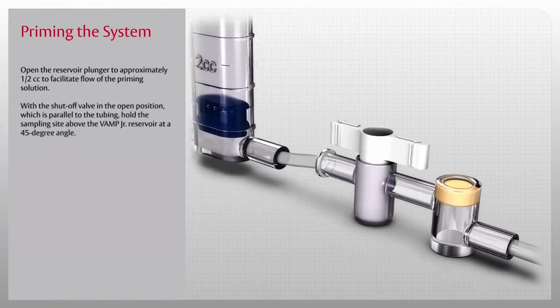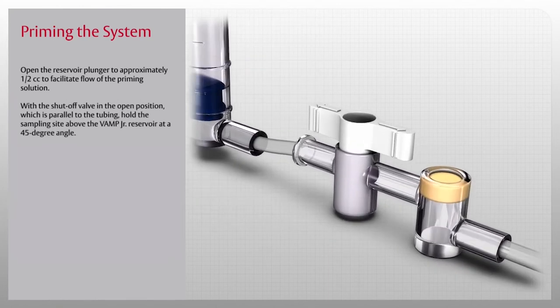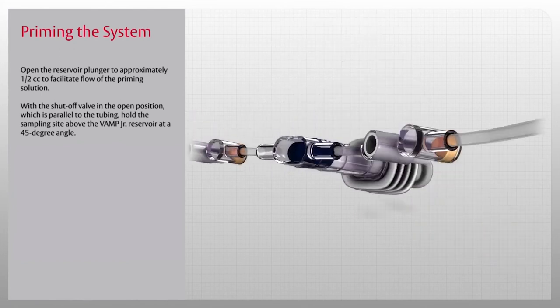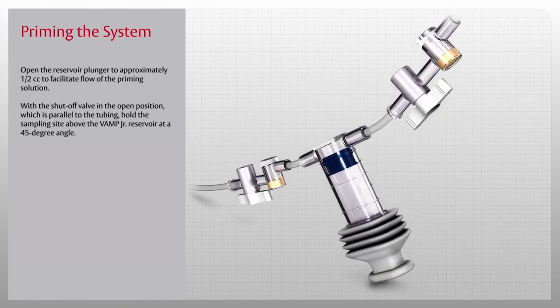Next, with the shutoff valve in the open position, which is parallel to the tubing, hold the sampling side above the Vamp Junior reservoir at a 45 degree angle.